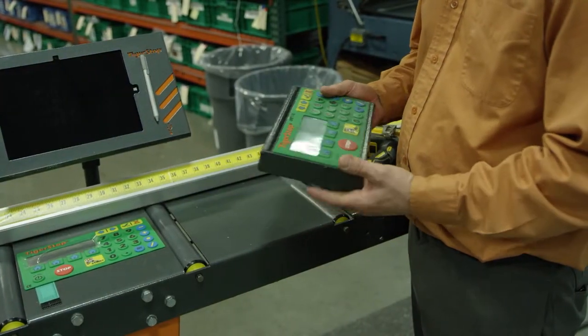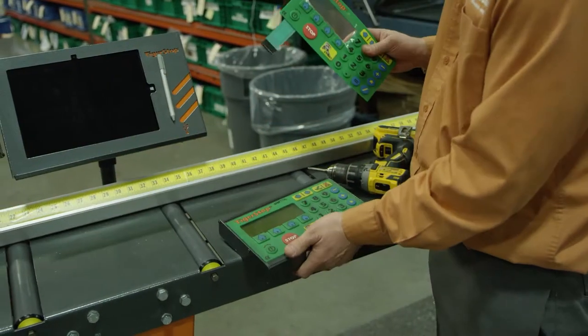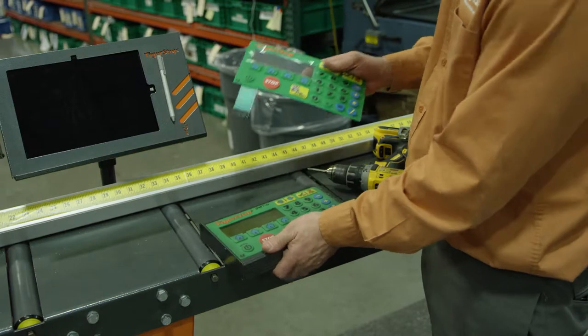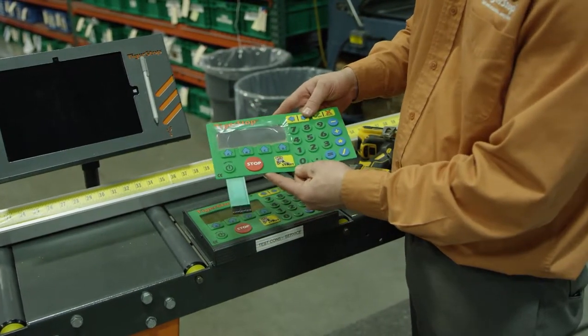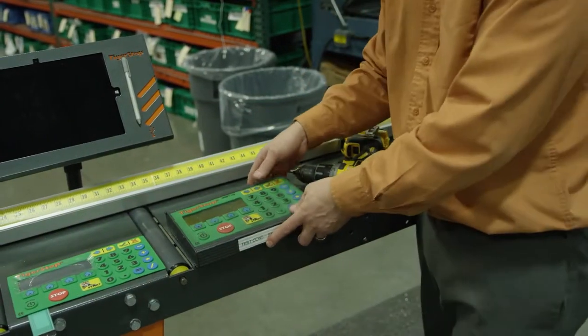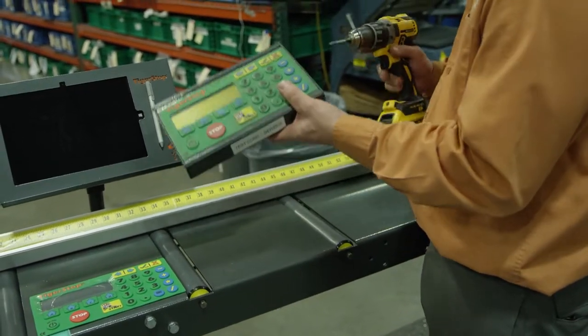So we're going to go ahead and replace the keypad membrane on this CON5 controller. The part number for that is CON5-KPM. So that's just CON5, controller 5, KPM.